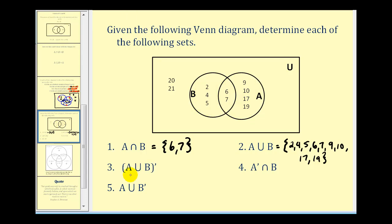Third, the complement of A union B — that's all the elements in the universal set that are not in the union of A and B. Since A union B covers that entire region, the elements not in it are twenty and twenty-one.